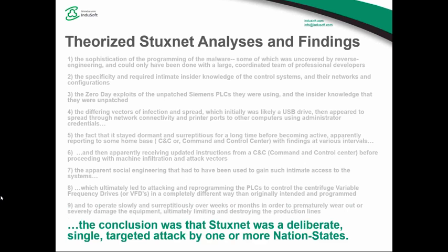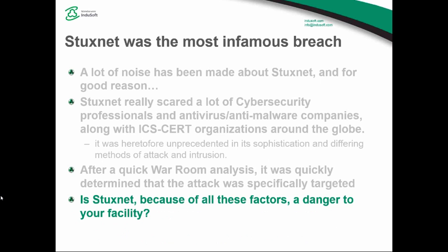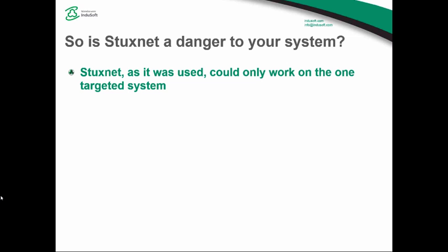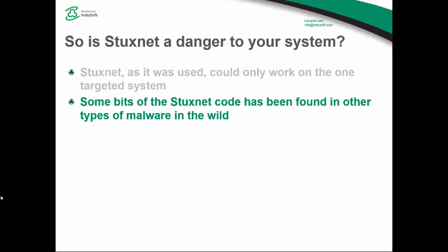The malware appeared to receive updated instructions from the CNC before proceeding with machine infiltration. Apparent social engineering gained intimate access, ultimately attacking and reprogramming PLCs to control the centrifuge variable frequency drives in a completely different way than originally intended, operating slowly and surreptitiously over weeks and months to prematurely wear out or severely damage the equipment, ultimately destroying the production lines. The ultimate conclusion was that Stuxnet was a deliberate, single-targeted attack by one or more nation-states. Is Stuxnet actually a danger to your control system? The answer is yes and no — Stuxnet as used could only work on one targeted system, requiring a great deal of initial on-site reconnaissance or insider knowledge.